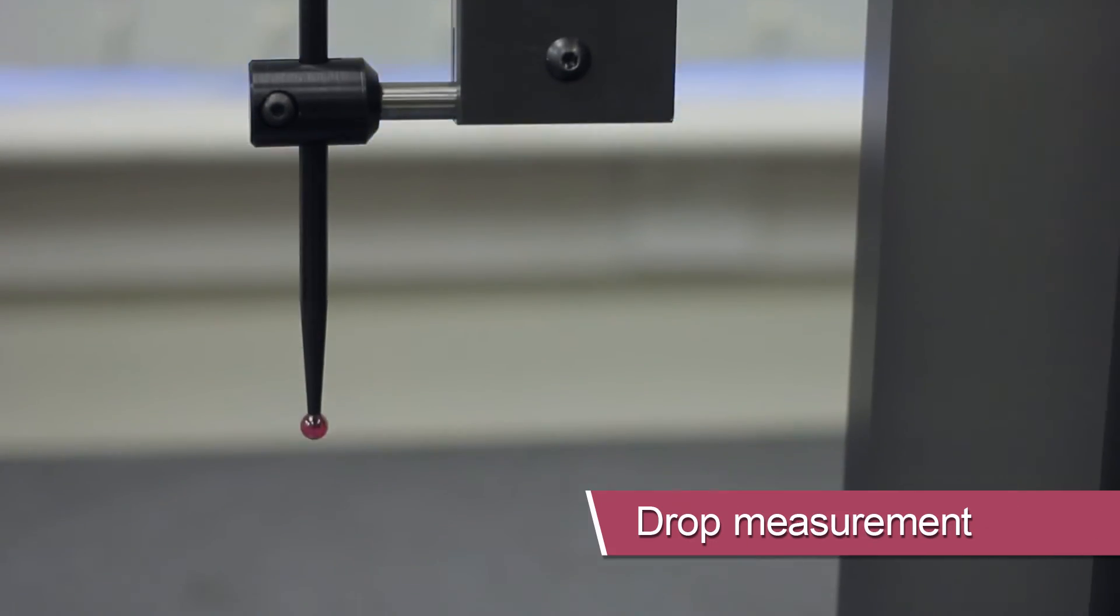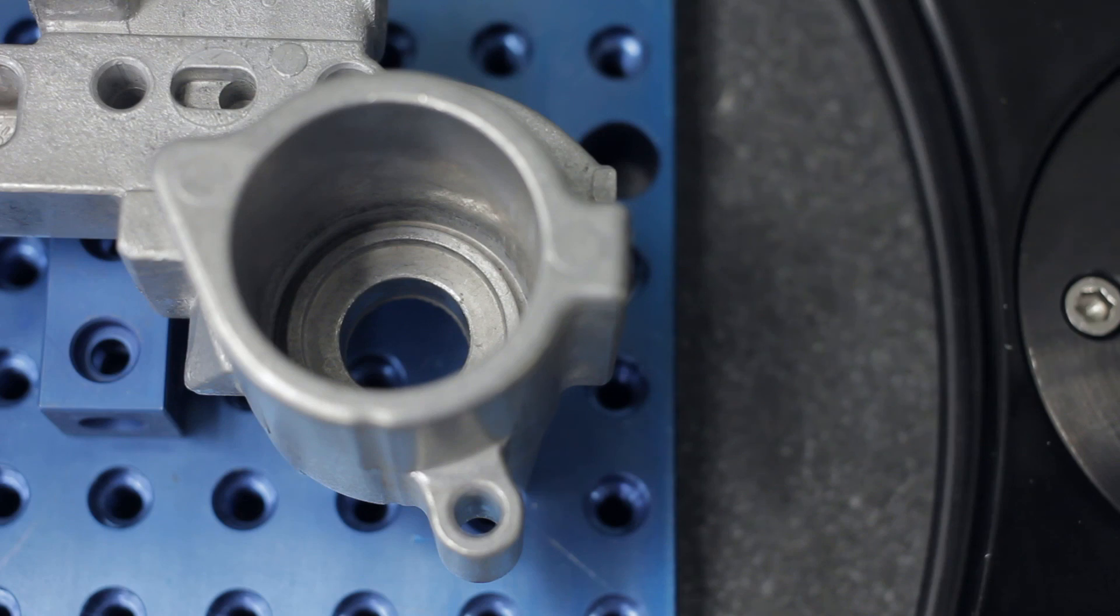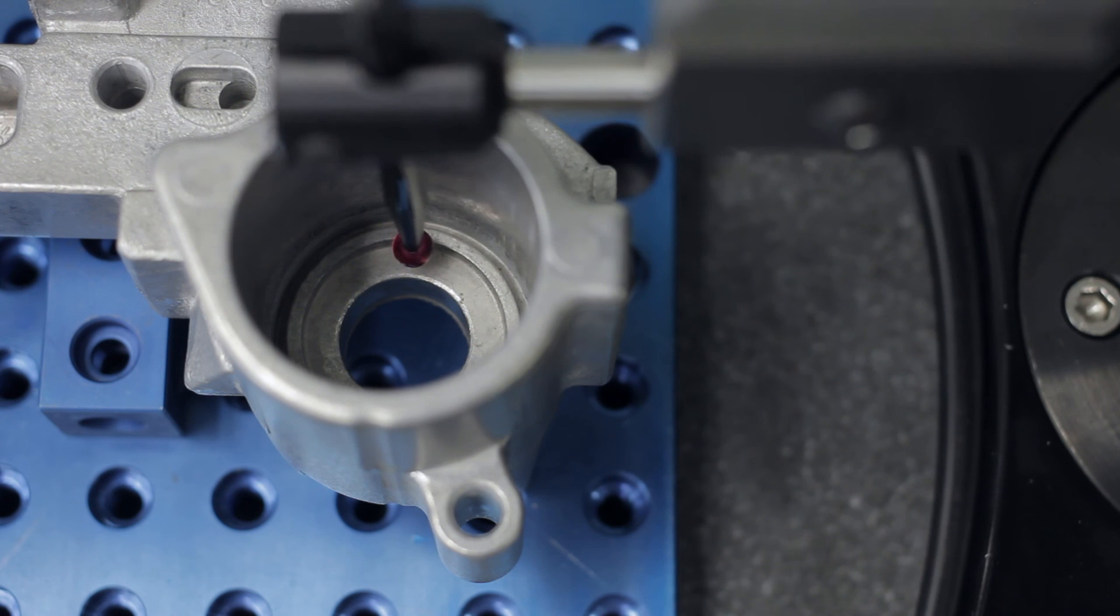Specialist probes are able to perform specific measurement functions. Here, a depth gauge measures the drop on a component.